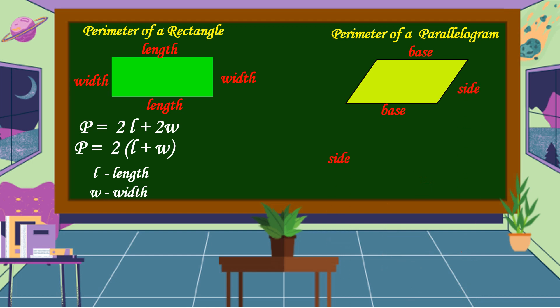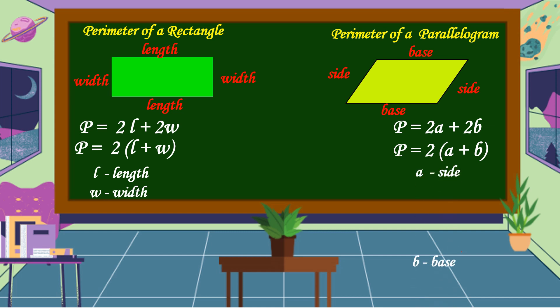Next, we're going to discuss the perimeter of a parallelogram. The formula for finding the perimeter of a parallelogram is P = 2A + 2B, or P = 2 times (A + B), where A is the side and B is the base.